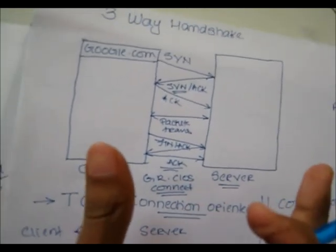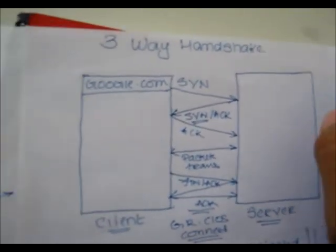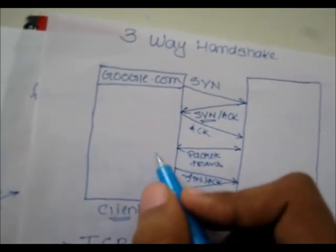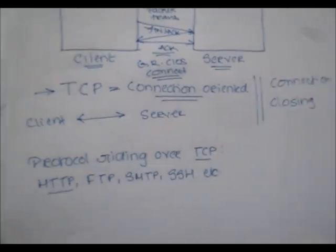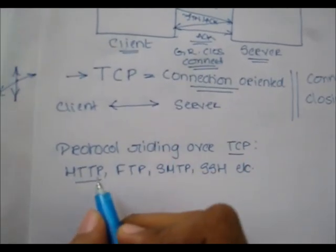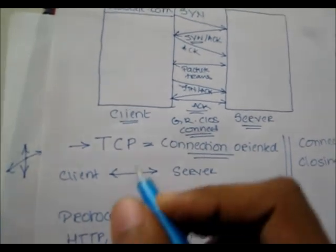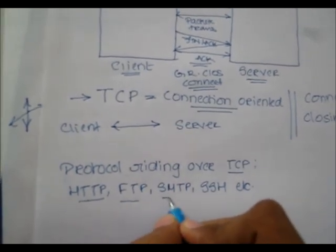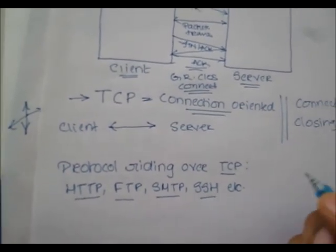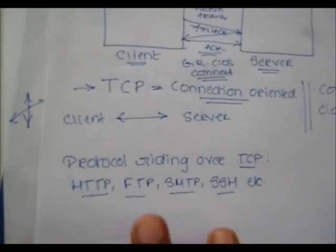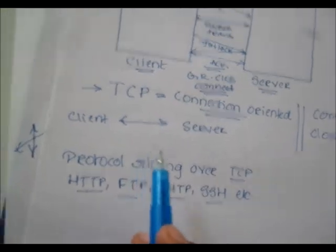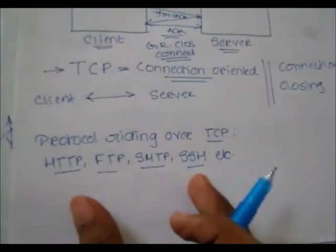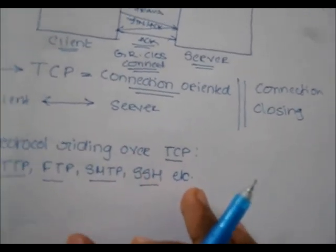So this is exactly what a three-way handshake means — the first part is for connection and the second part is for closing. Now, there are some protocols that run over TCP: HTTP, which is used for loading websites; FTP; SMTP for emails; and SSH. All of these will need a three-way handshake before any connection is established between them.